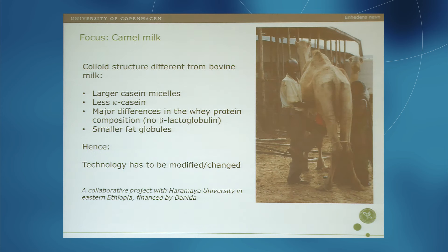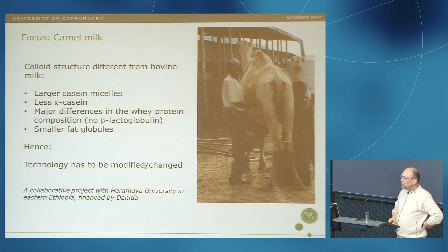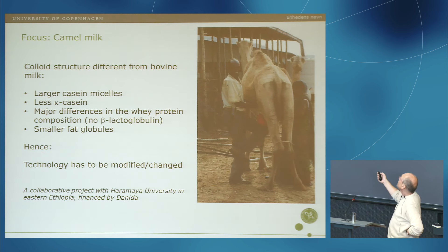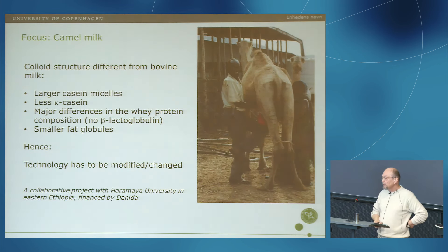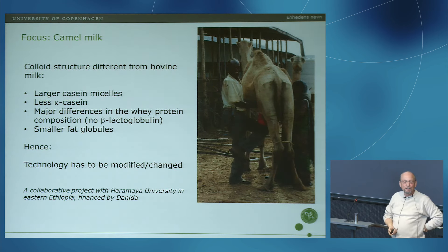We have a collaborative project with Haramaya University, financed by Danida. It also involves the Danish Technical University and Egan, who is the project manager. What we are trying to understand is the number of known differences in camel milk compared to bovine milk: they have larger casein micelles, there's less kappa-casein, and there are major differences in whey protein composition. Beta-lactoglobulin, which Tollins showed you an image of, is not present in camel milk, and that provides very different properties, so the technology has to be modified to make similar types of products.